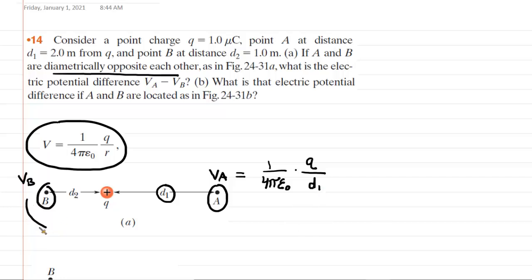The same thing would be true for VB. We could write VB is equal to 1 over 4 pi epsilon naught, multiplied by the charge, and then divided by the distance from that charge to location B. We can see from the diagram that that distance is symbolized by D2. So that is how we could use the equation for the electric potential as a result of a point charge for each of those two locations. But in part A, we need to find the difference between them, VA minus VB.